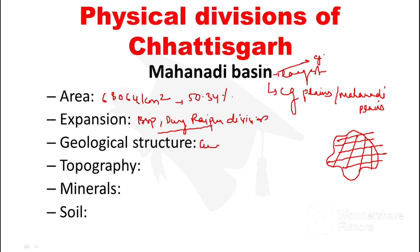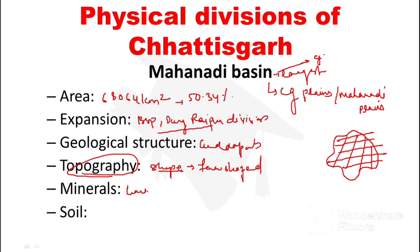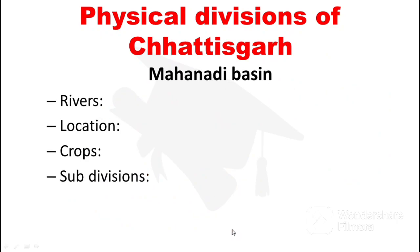The geological structure is made by Krupa rock. The shape is fan-shaped, like a pankha. Minerals found here include limestone and dolomite. The soil types found are red-yellow soil and, in some parts, black soil. The main river system here is the Mahanadi drainage system. Important rivers include Mahanadi, Shivnaath, Parry, and Hasdev.